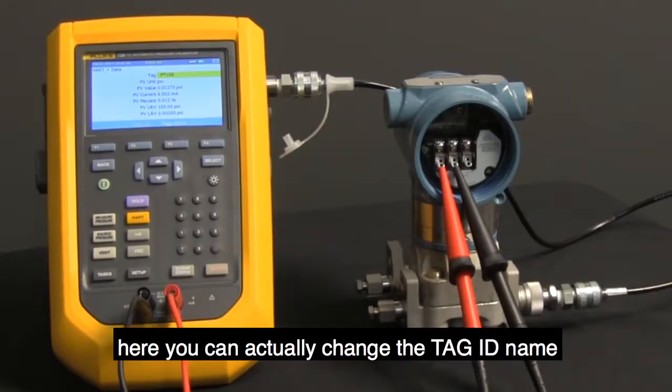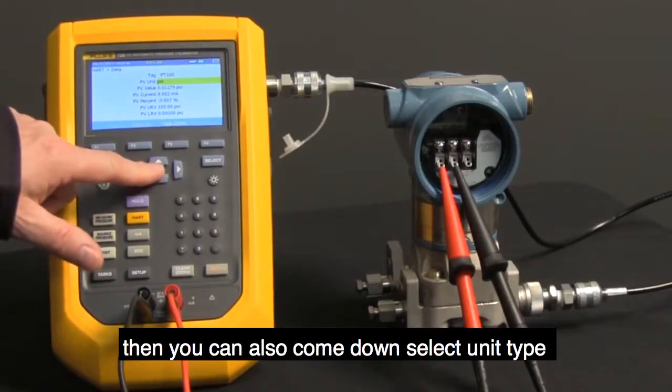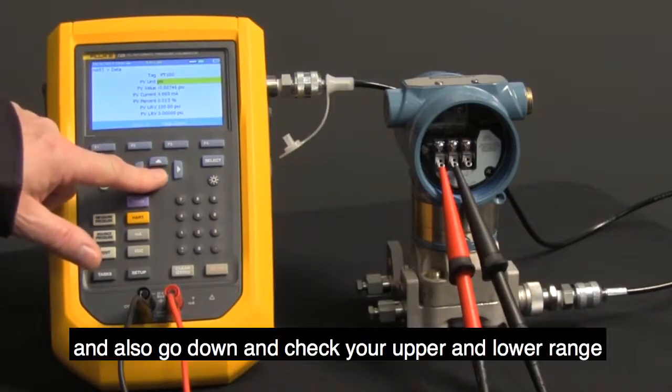Here, you can actually change the tag ID name. Then you can also come down, select unit type, and also go down and check your upper and lower range.